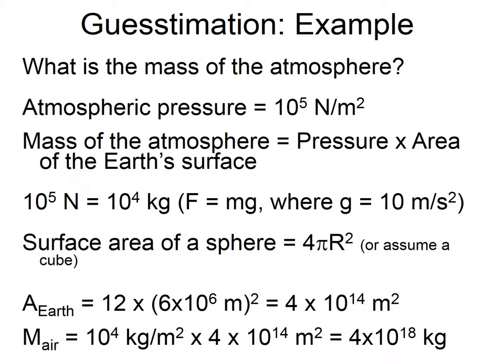So I actually managed to get the right answer, which is quite impressive. Now, can we use this in a useful way? We know humanity has burnt about 400 gigatons of carbon, putting CO₂ into the atmosphere. Since the Industrial Revolution, the atmospheric concentration of CO₂ has increased.